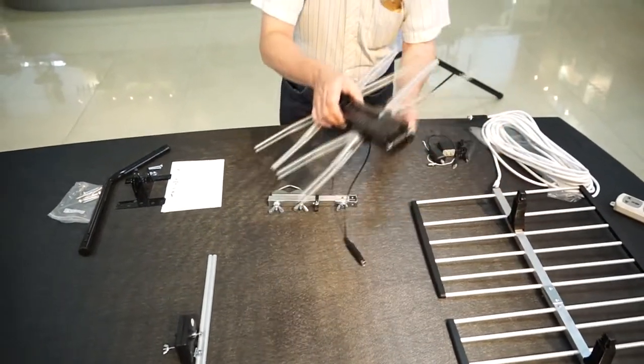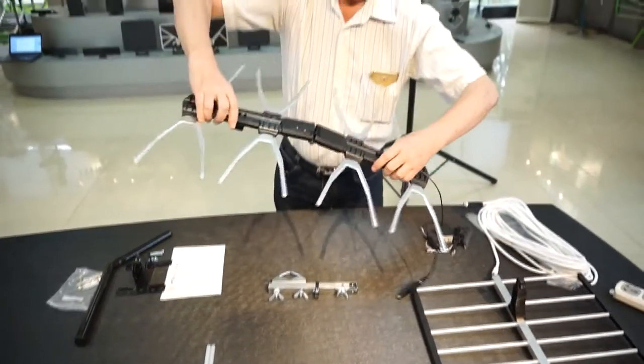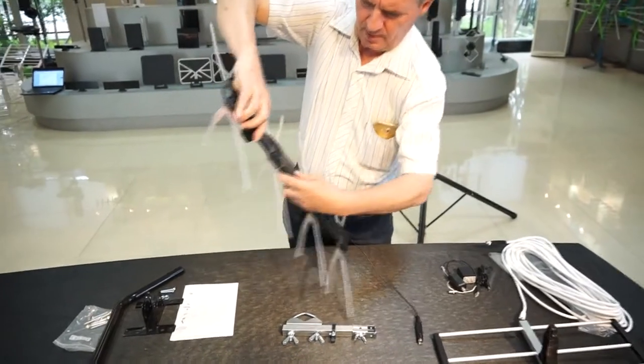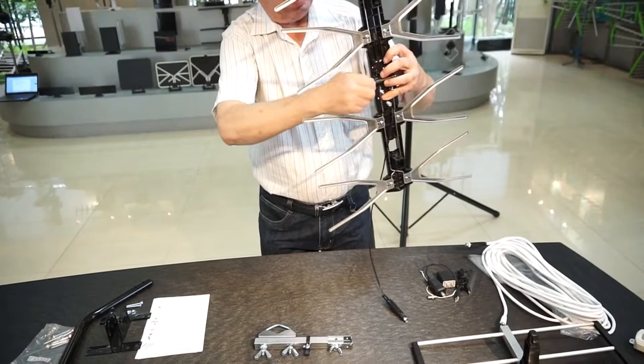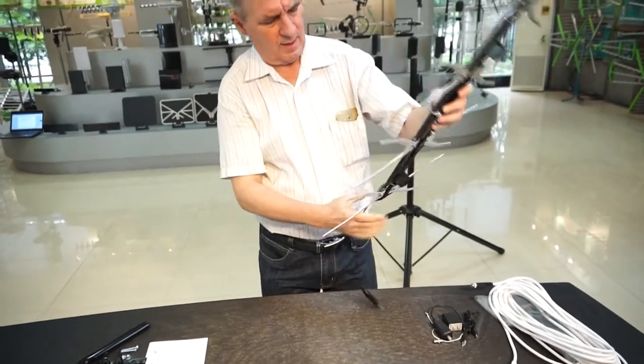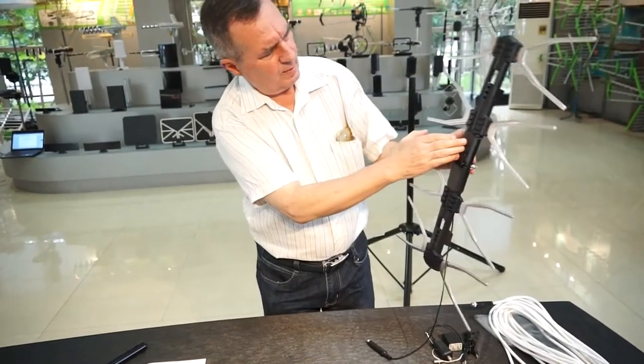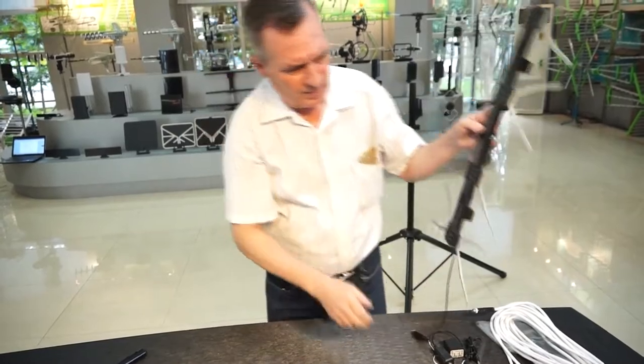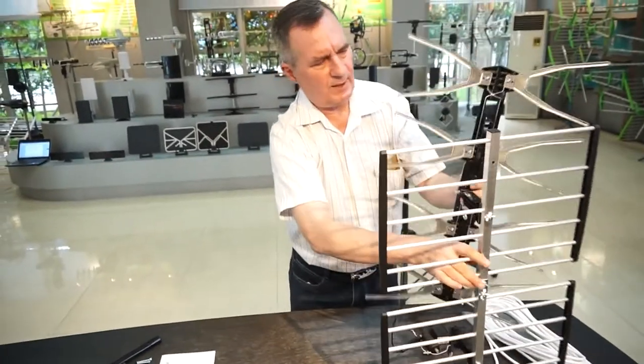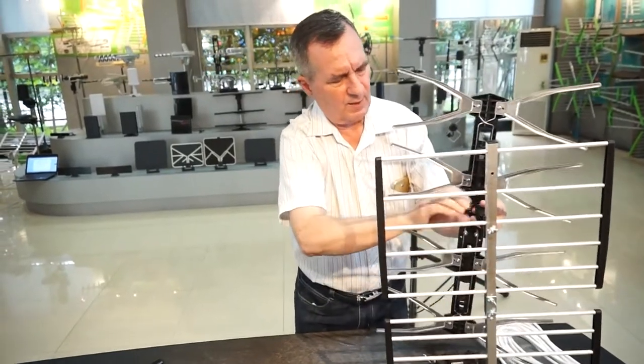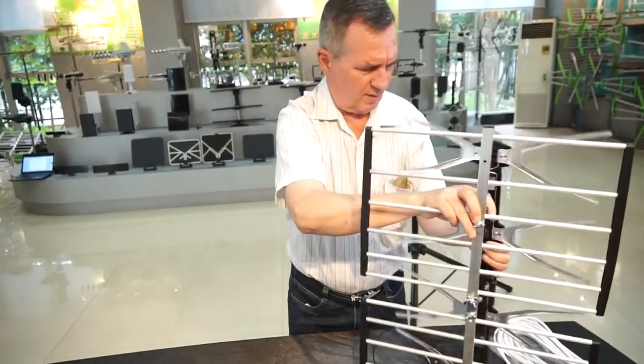Take the director and open it out. Slightly tighten the wing nut to stop it folding. The top is indicated up. The top is also the same place that the VHF director goes.